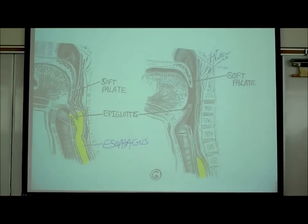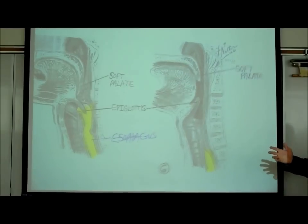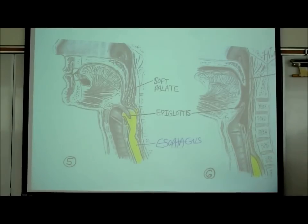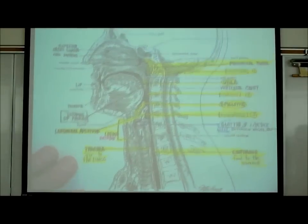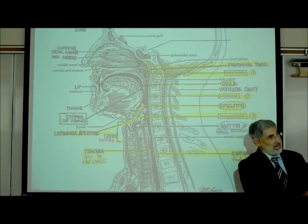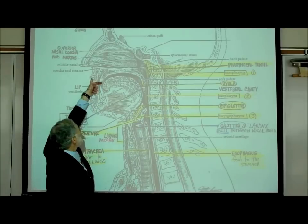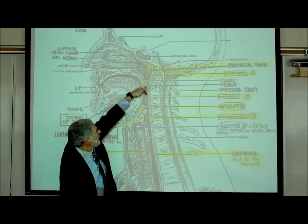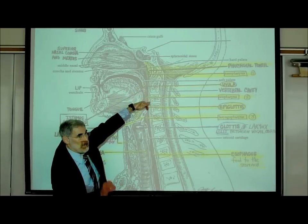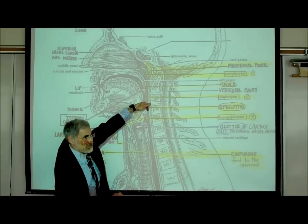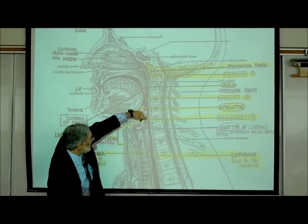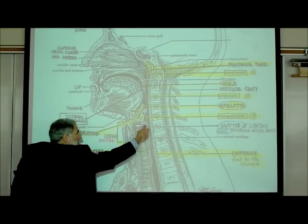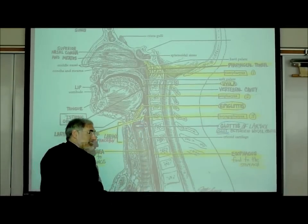These swallowing reflex pictures are available in color on the instructor's video. If someone needs to be intubated, an endotracheal tube is passed through the mouth, through the oropharynx and laryngopharynx, through the laryngeal aperture, right through the glottis slit between the vocal cords, and into the trachea.